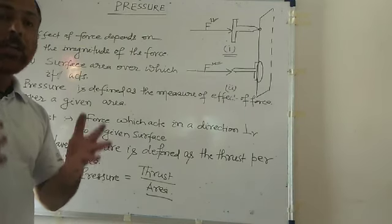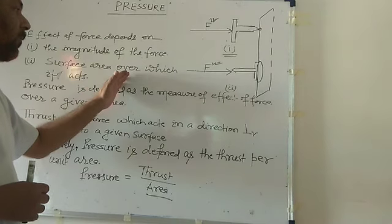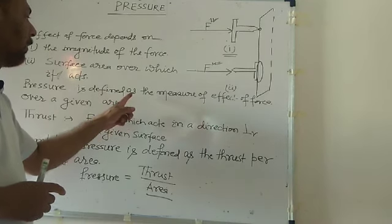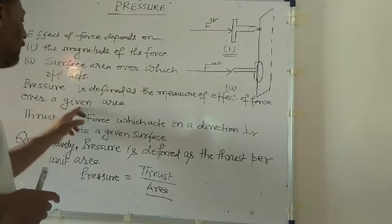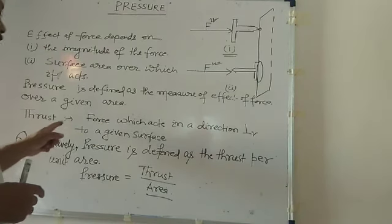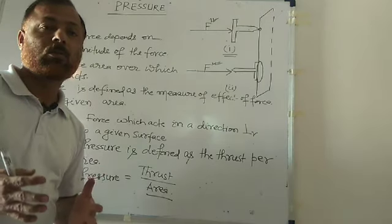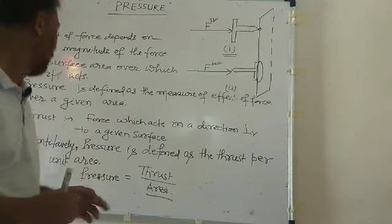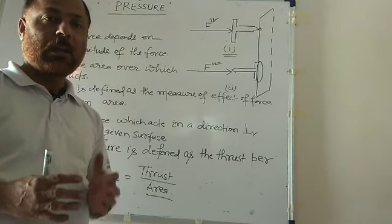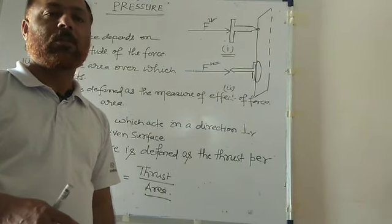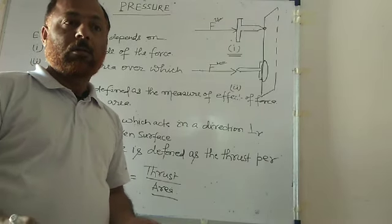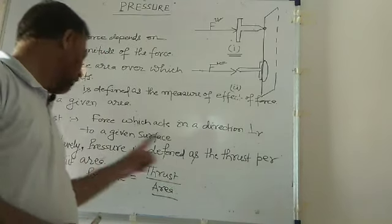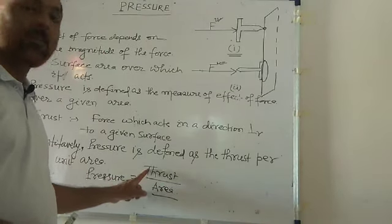A new physical quantity is introduced which includes both these effects, and it is pressure. Pressure is defined as the measure of the effect of force over a given area. There is another term, thrust, which refers to the force which acts in a direction perpendicular to the surface. For example, our weight acts in a direction perpendicular to the surface, so weight is an example of thrust. Quantitatively, pressure is defined as thrust per unit area: pressure equals thrust divided by area.